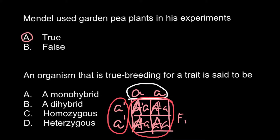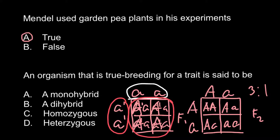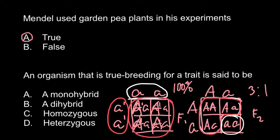So we would have 'capital A small a' crossed with 'capital A small a', and the next generation would be the F2 generation. If we get a ratio of 3 to 1 — where in our first cross we had 100% of progeny with the same genotype — in the F2 the monohybrid cross gives a 3 to 1 ratio: 3 red to 1 white. So we can say that the capital A allele, or red color, would be dominant over white.